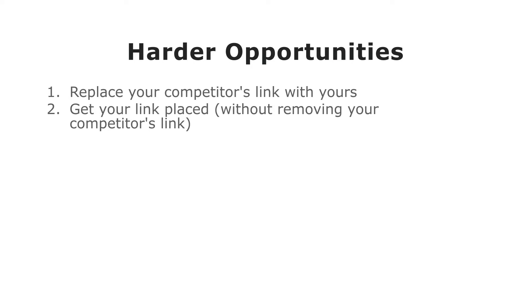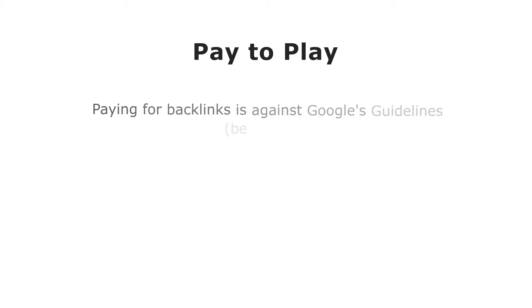The last method — the most frowned upon but one of the most common — is simply pay-to-play: you identify a link opportunity and pitch how much you're willing to pay, or ask how much they want for a link placement. This is against Google's guidelines and does come with risk. Also, some websites don't accept payment for links at all, so you have to inquire before discussing any financials.